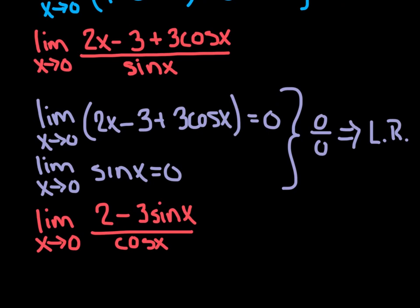So even though I took the first derivative of both the numerator and denominator, I still got zero over zero. And so we'll say L'Hopital's rule applies a second time.